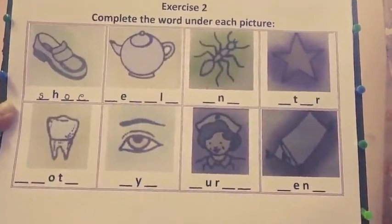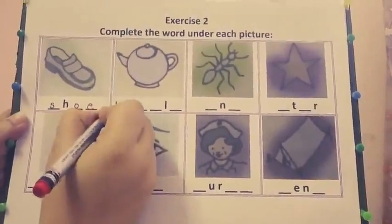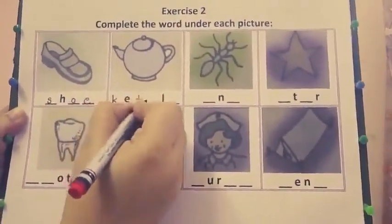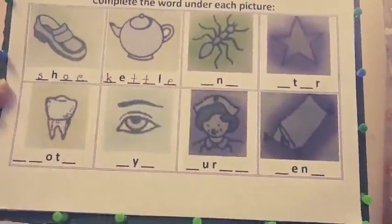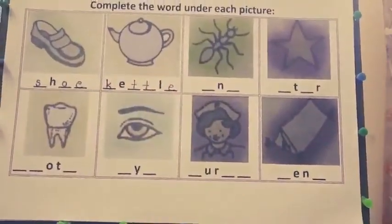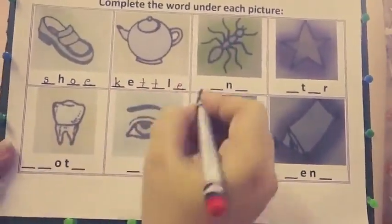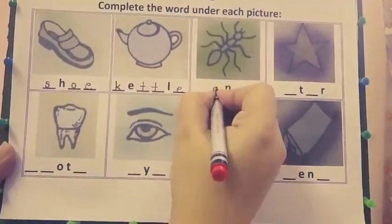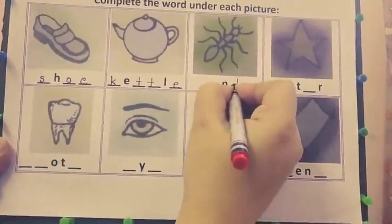In the next picture — kettle. K-E-T-T-L-E. In the next picture — aunt. A-N-T. Aunt.